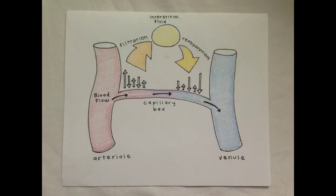Next, we have blood colloid osmotic pressure. This is a form of osmotic pressure exerted by plasma proteins in a blood vessel that usually tend to pull water into the circulatory system. This pressure promotes reabsorption. Reabsorption is the organic process in which a substance of some differentiated structure that has been produced by the body undergoes lysis and assimilation.